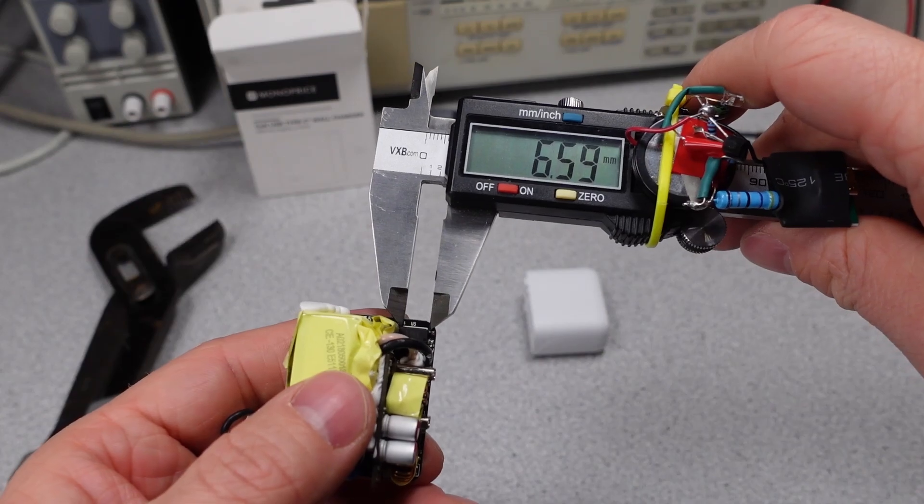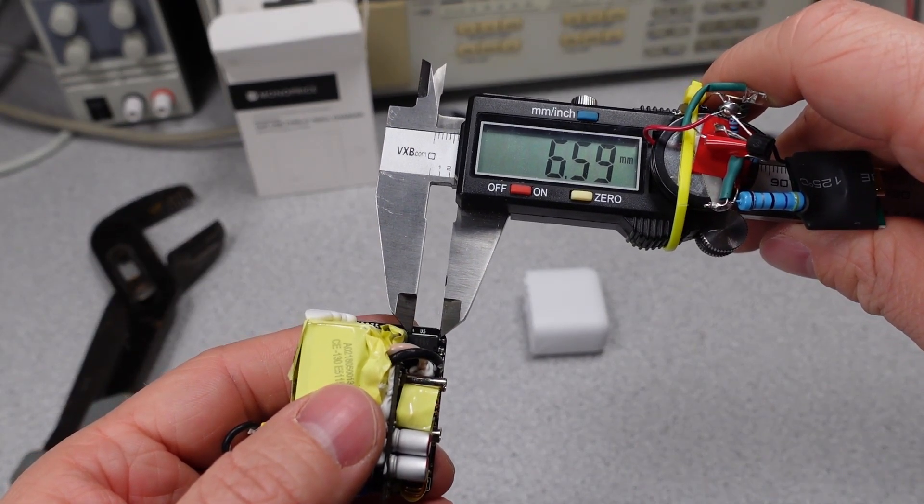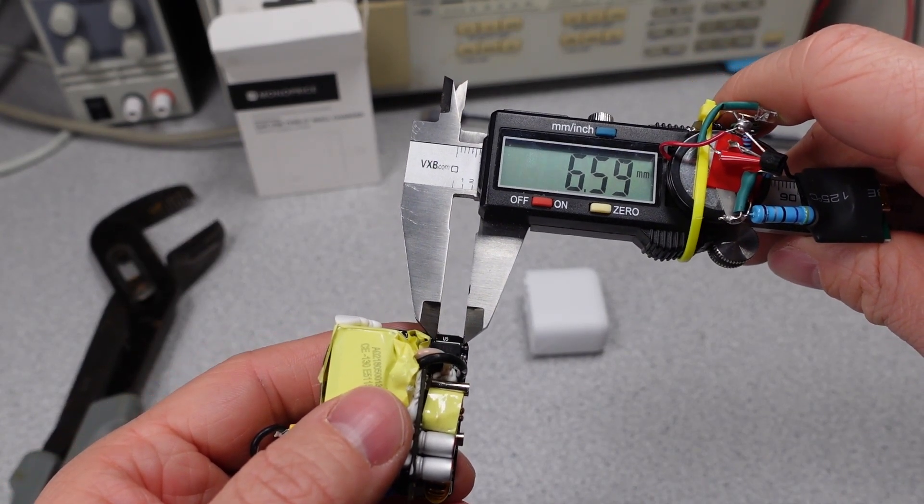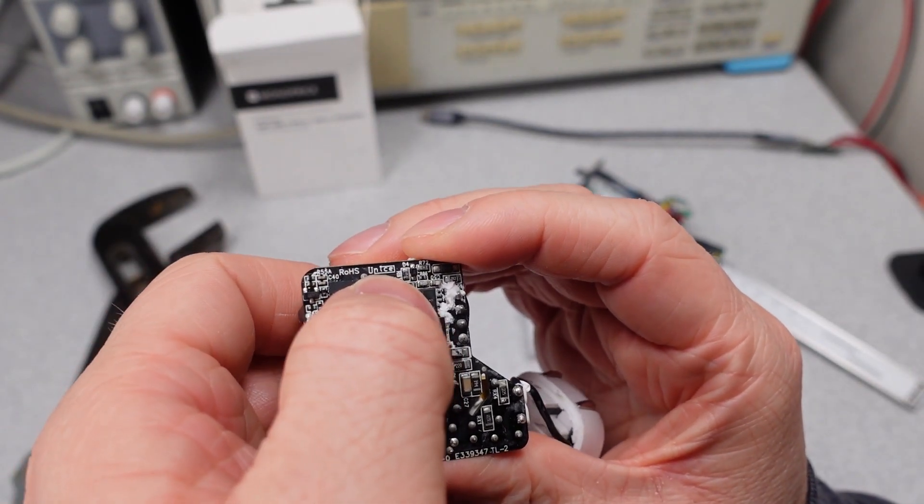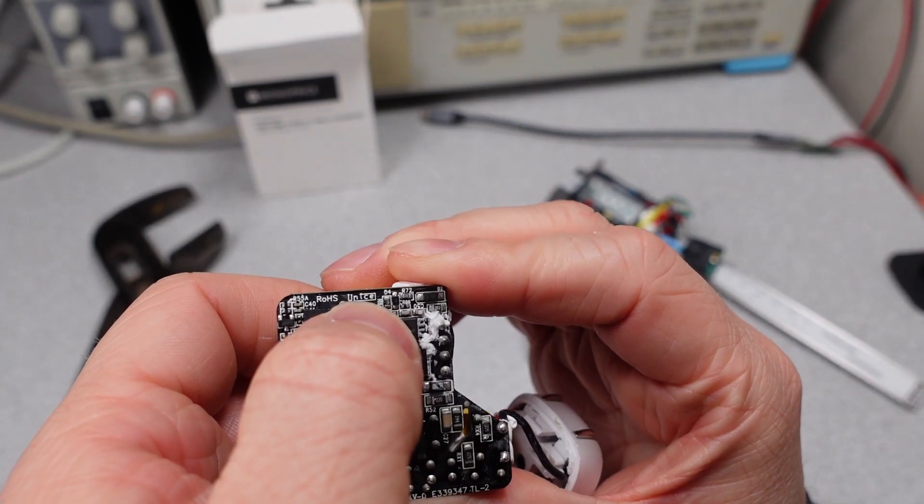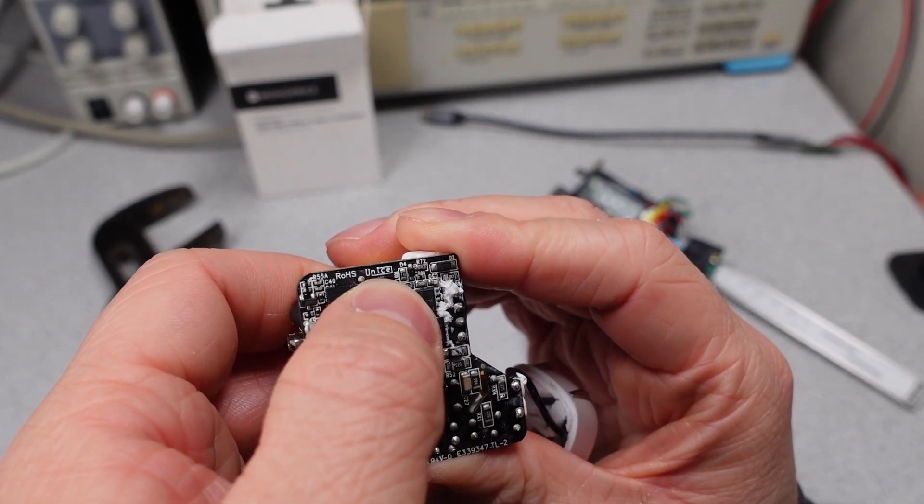Again, you see a pretty common number there. The spacing between the pins on that optic coupler, about 6.6 millimeters. You see up here ROHS, of course, but we see UNICE. So that must be part of the manufacturer that makes this thing.